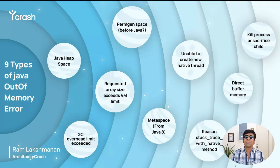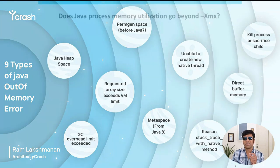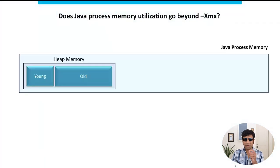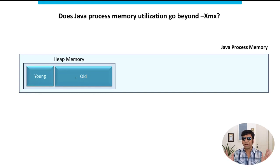First of all, people get surprised — are there nine different types of out-of-memory errors? What are they? How will I know what type of out-of-memory error I am getting? To understand these nine types, we need to understand what the different JVM memory regions are. Your Java process memory has multiple regions. There is a primary region called heap memory, which has a young generation and old generation. This accounts for more than 80-90% of memory.